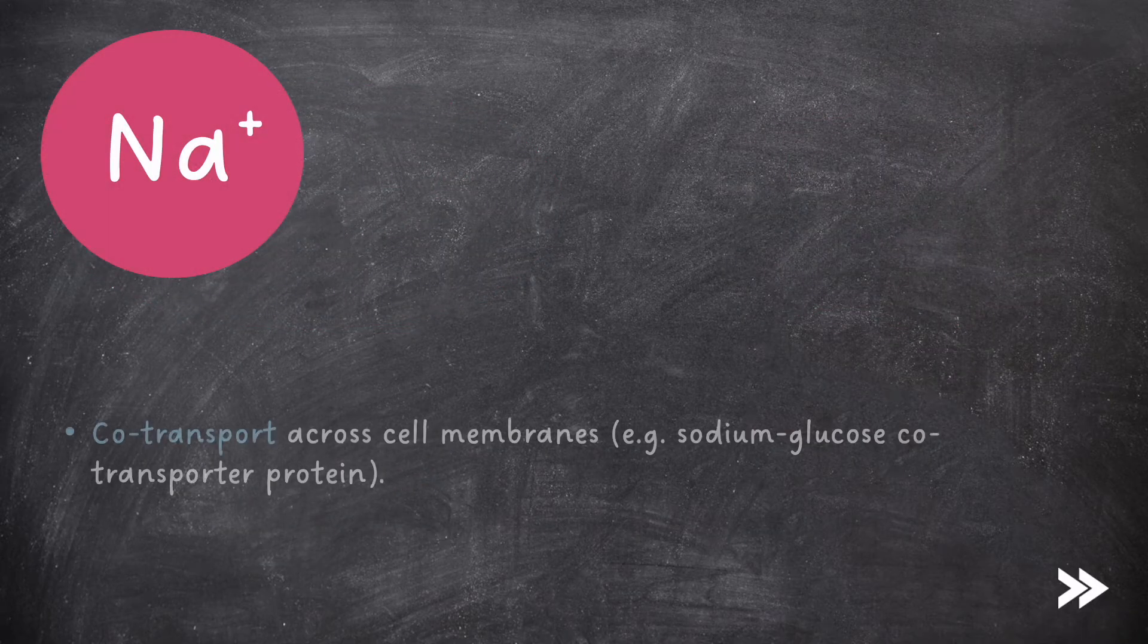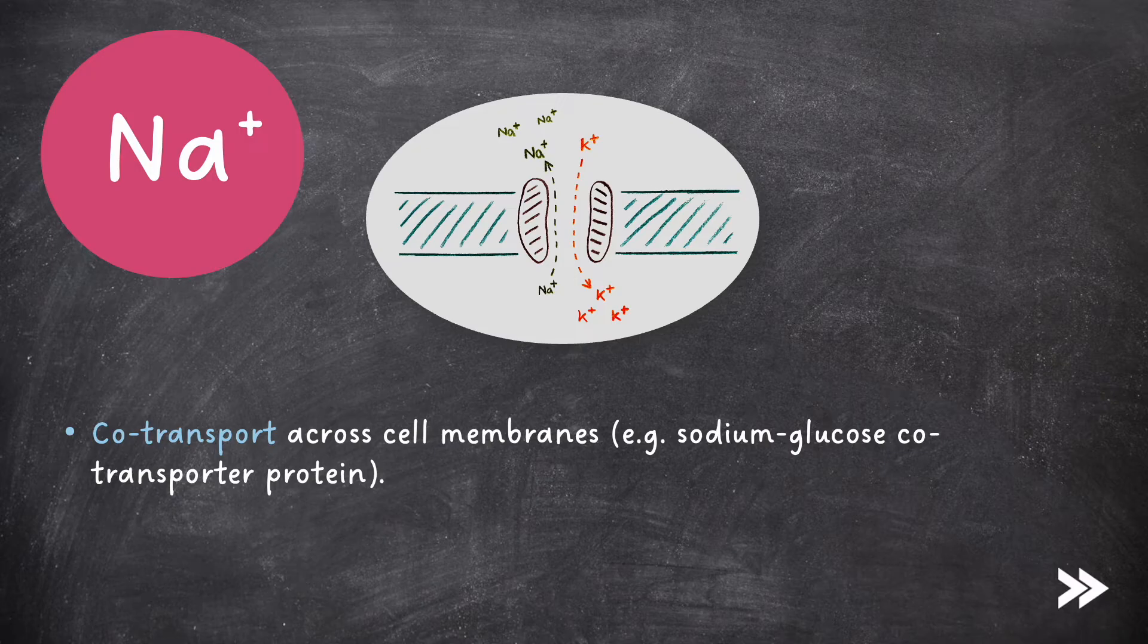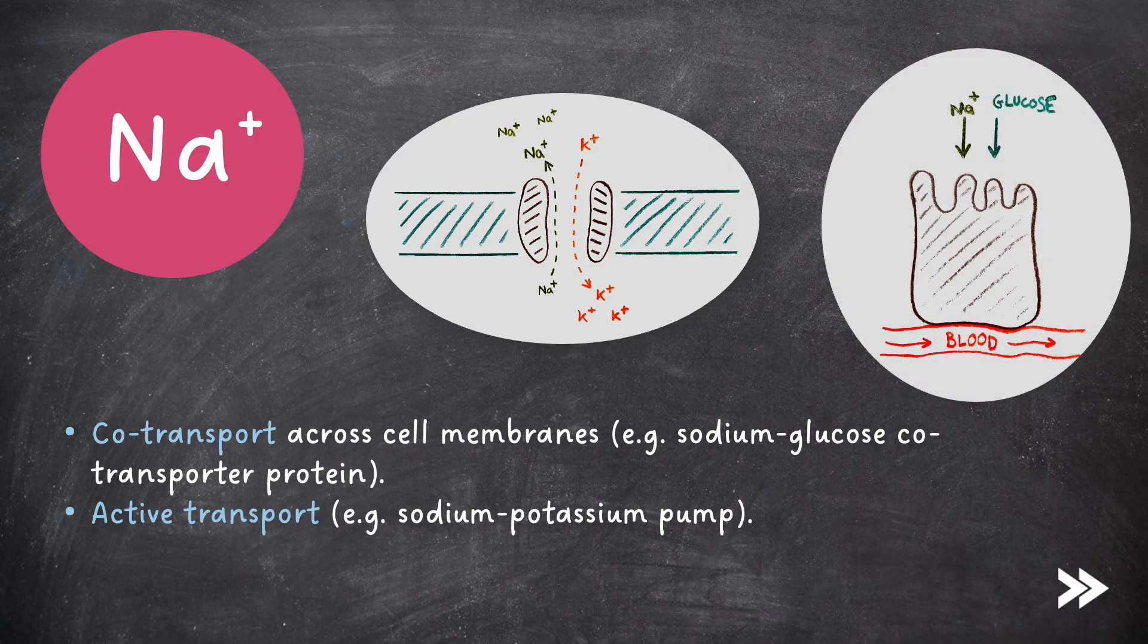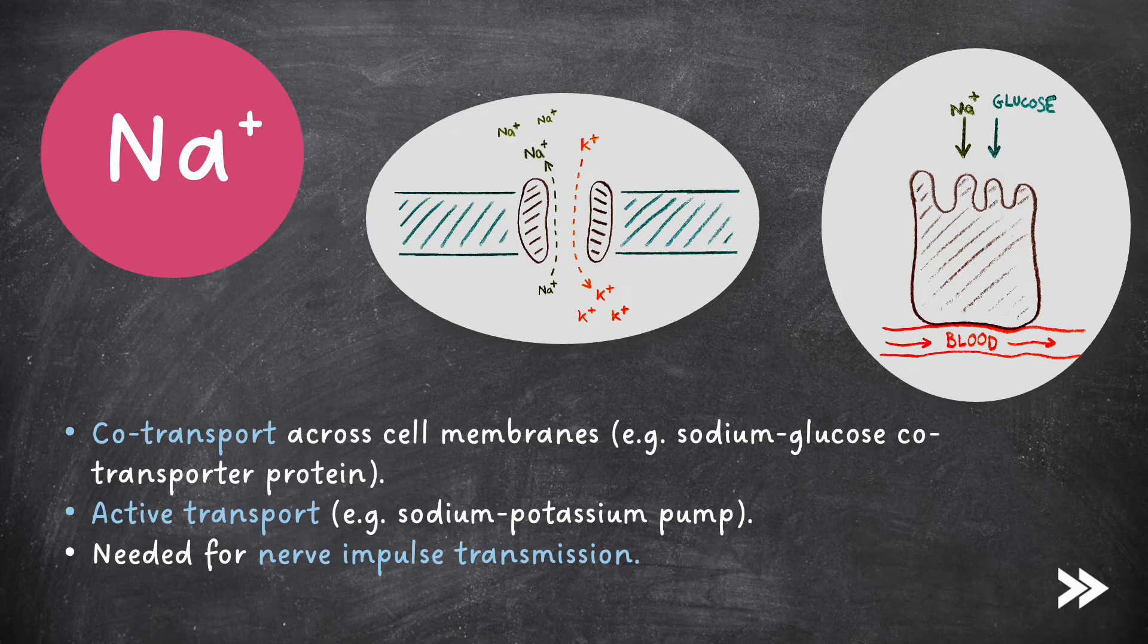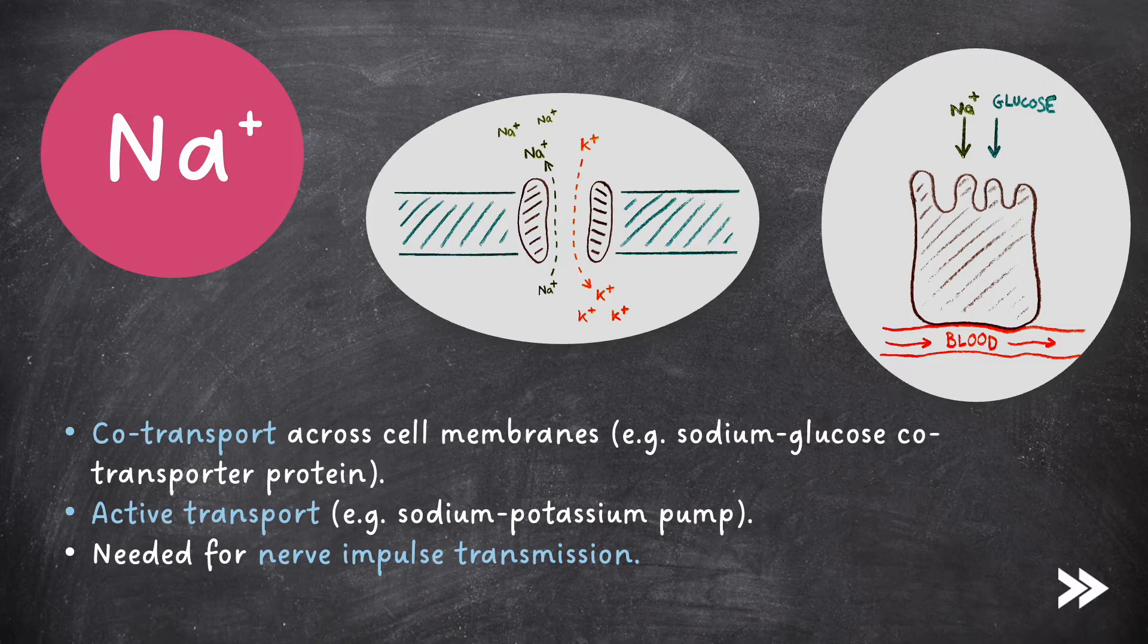Then we also have sodium ions. These are involved in co-transport across cell membranes, for example in a sodium-glucose co-transporter protein, as well as active transport, as in a sodium-potassium pump. Sodium ions are also needed for nerve impulse transmission. More detail on these processes can be found in my videos on digestion and absorption, as well as nerve impulses.